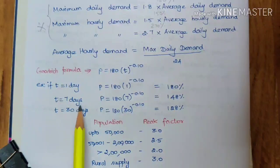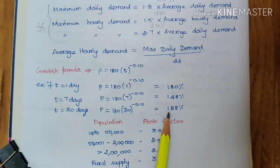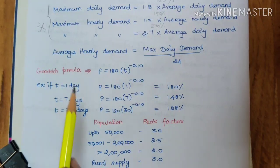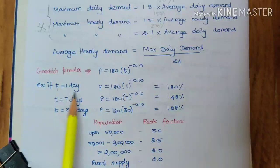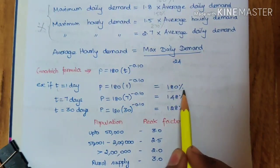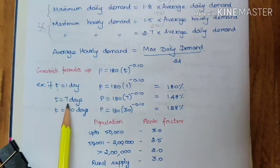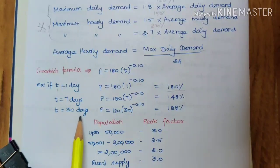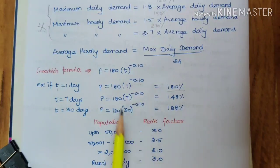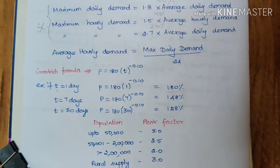Using the Goodrich formula: for 7 days (weekly), the peak factor is 148%; for 30 days (monthly), it is 128%. When t = 1 day we get 180%, which matches the maximum daily demand formula. So weekly demand peak factor is 148% and monthly demand peak factor is 128%. This formula can be used to calculate the peak factor for any number of days required.